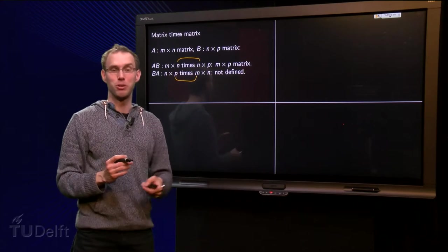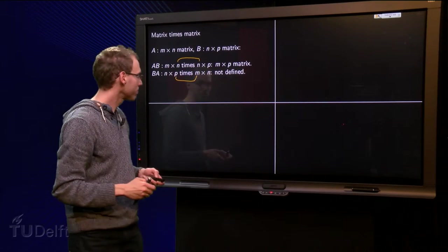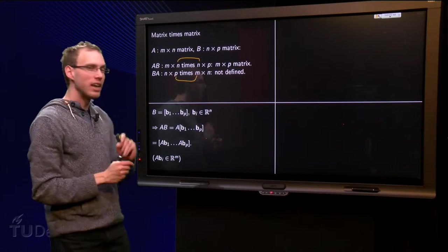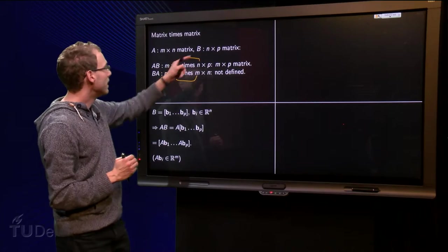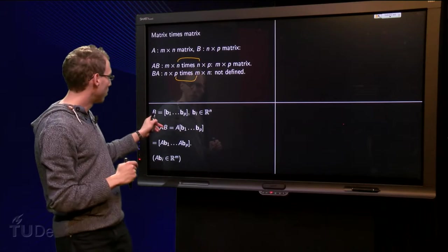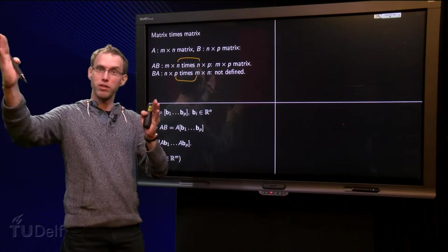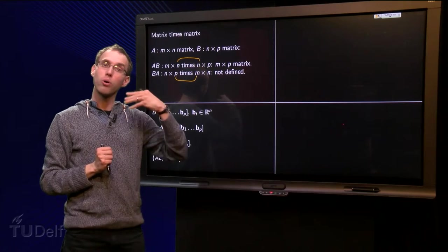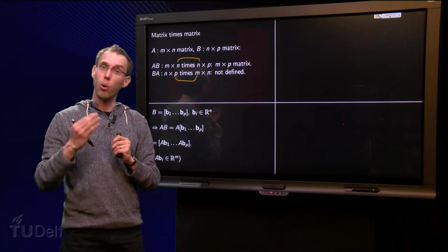So now you know when you can compute the matrix product, but how do you compute it? And why do you have this strange rule over here? Well, let's write B in terms of its columns. B is an N times P matrix, so N high and width of P, so B has P columns because the width of B is P. All columns have N components, so the vectors BI are all in Rn.